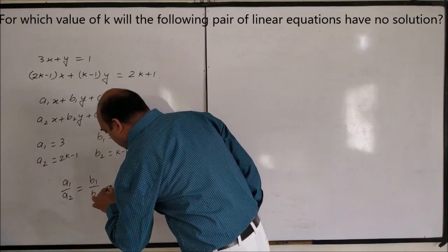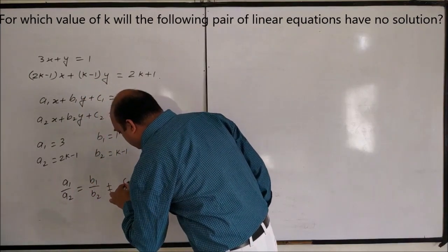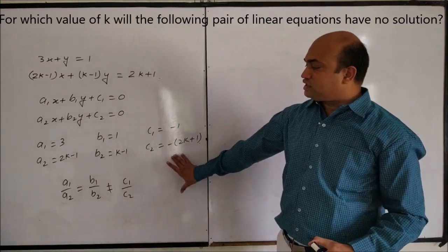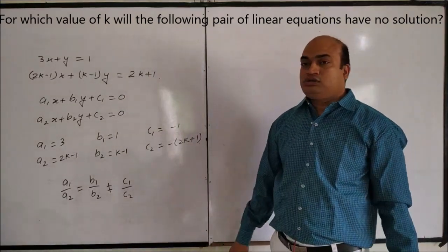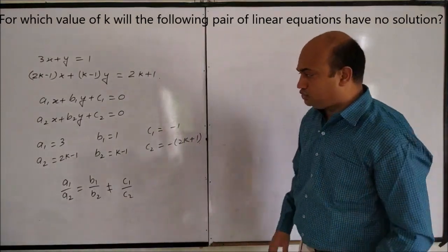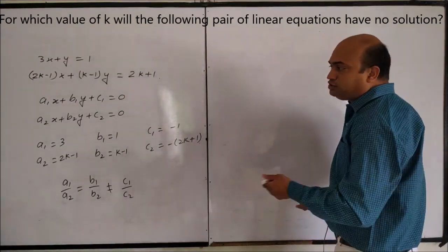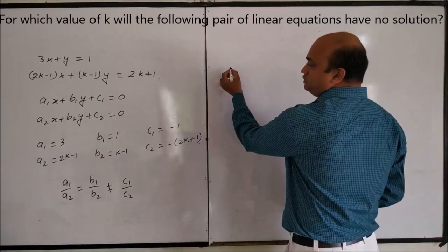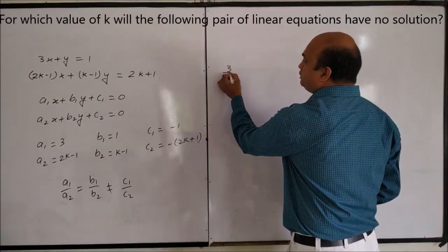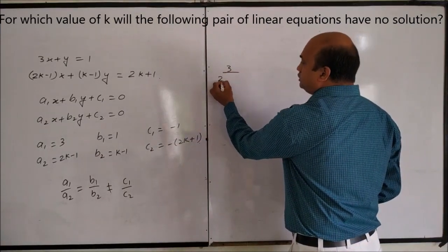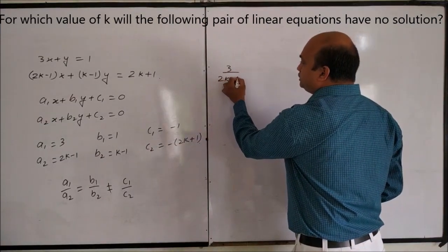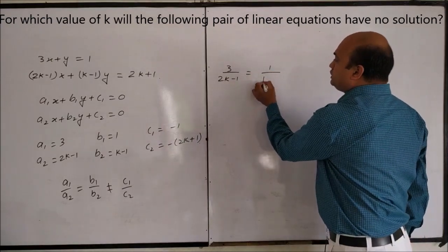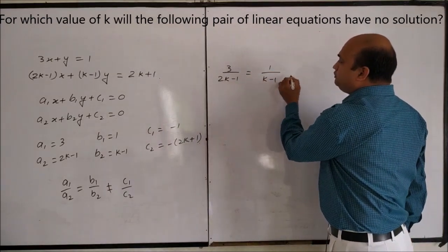For no solution, the condition is: a1 upon a2 is equal to b1 upon b2, which is not equal to c1 upon c2. We put the values into this condition: 3 by (2k minus 1) is equal to 1 upon (k minus 1).